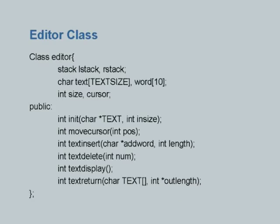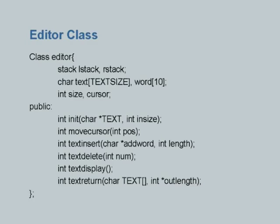We will go through the other function definitions which we have already seen, but will specifically look at the definitions of the two new functions: text display and text return. For both of these we shall be using the L stack and R stack. To recall: all characters to the left of the cursor are pushed onto L stack, all characters to the right of the cursor are pushed onto the right stack. That will be the status of the editor at any point in time.